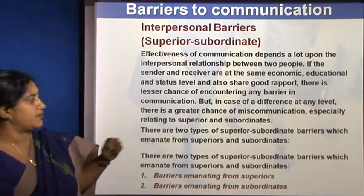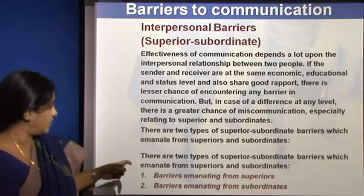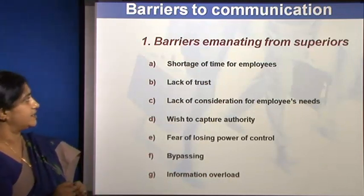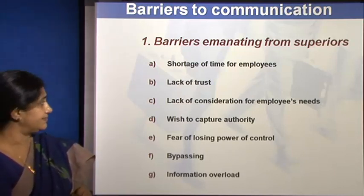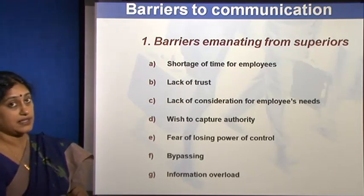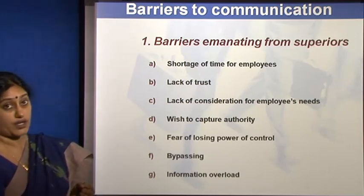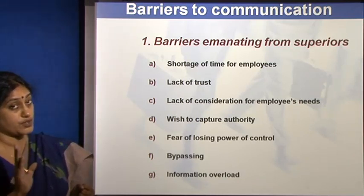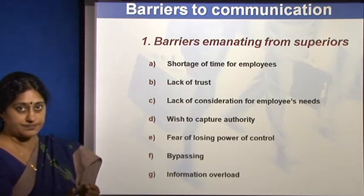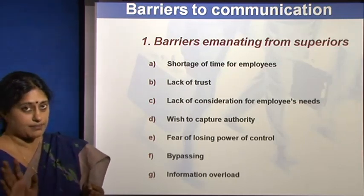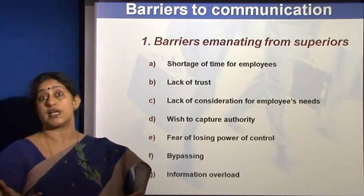There are two types of superior-subordinate barriers: those emanating from superiors and those from subordinates. Barriers from superiors include: shortage of time for employees, not being willing to listen, lack of trust in juniors, lack of consideration for employees' needs, a wish to capture authority, fear of losing power or control, bypassing hierarchy to go directly to juniors, and information overload where too much information overwhelms the receiver.